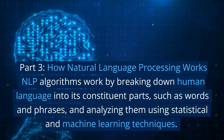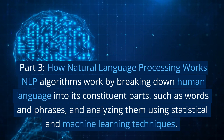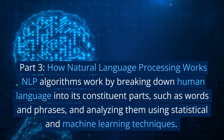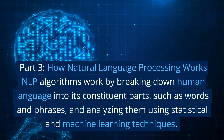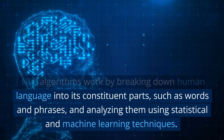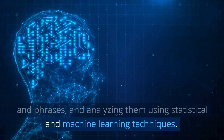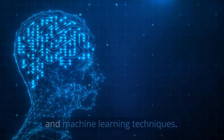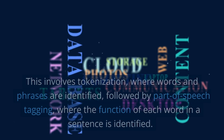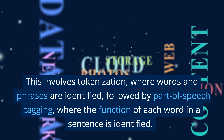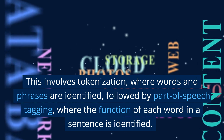Part 3: How Natural Language Processing Works. NLP algorithms work by breaking down human language into its constituent parts, such as words and phrases, and analyzing them using statistical and machine learning techniques. This involves tokenization, where words and phrases are identified.